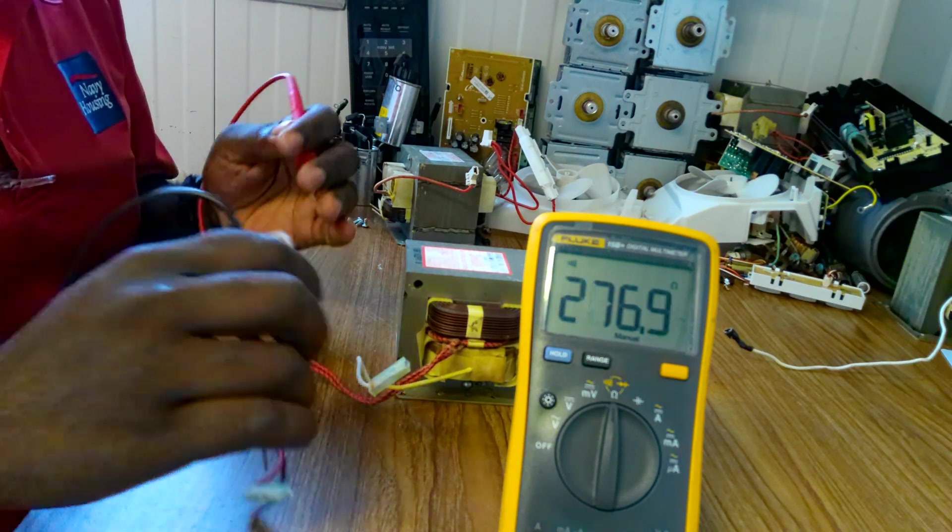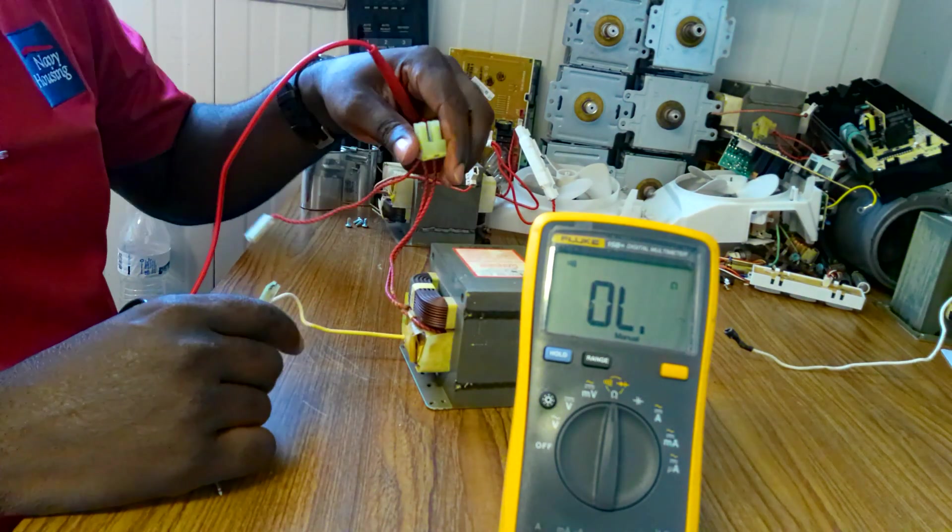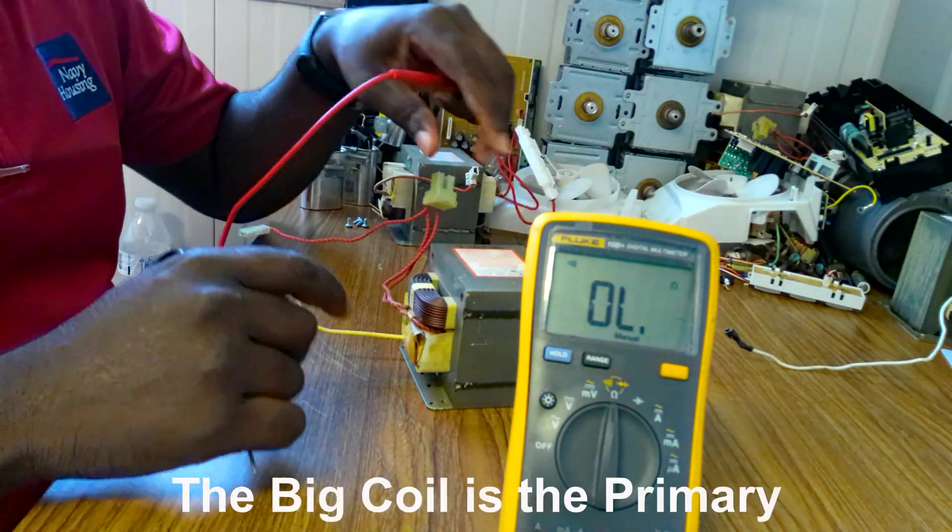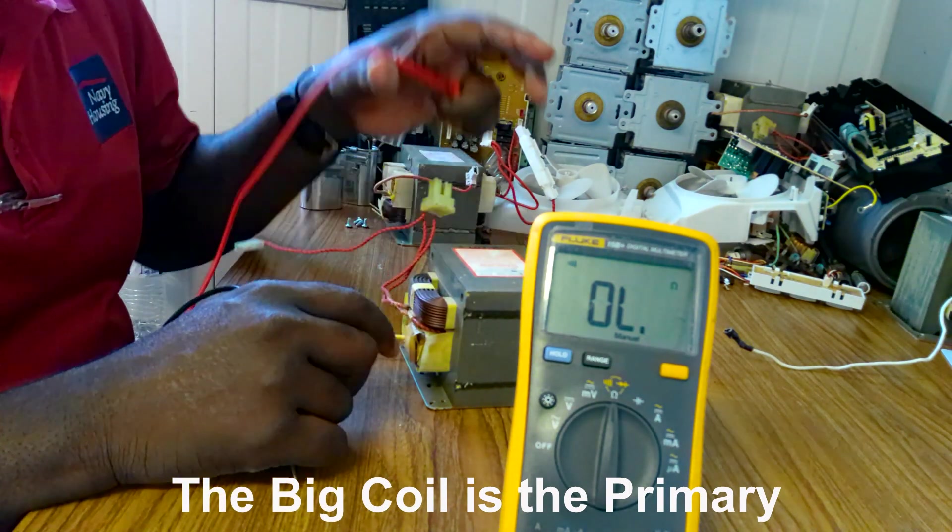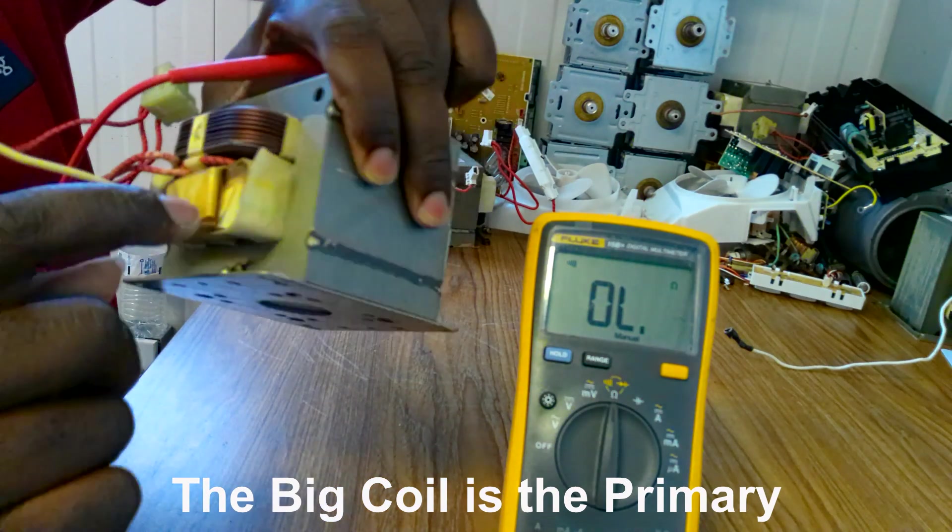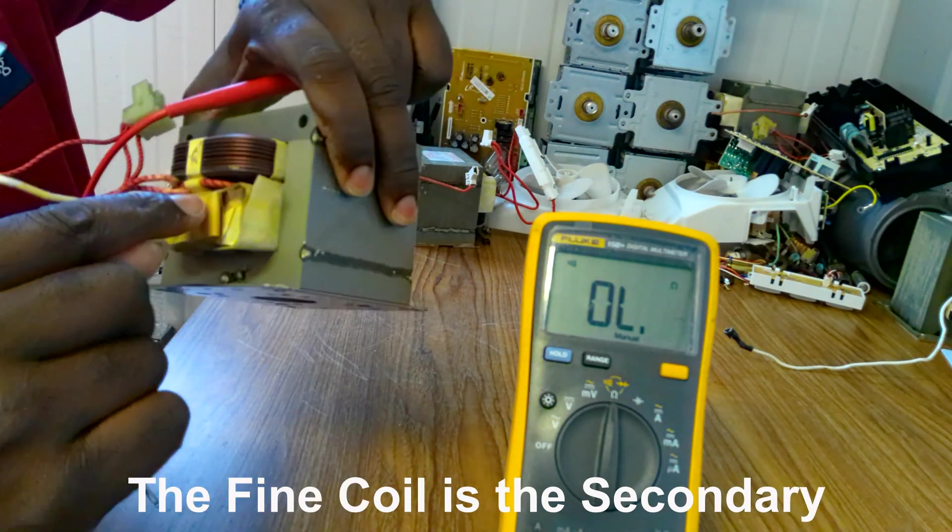So this is good. This is the primary coil. The primary has a big coil, and the secondary coil is very fine.